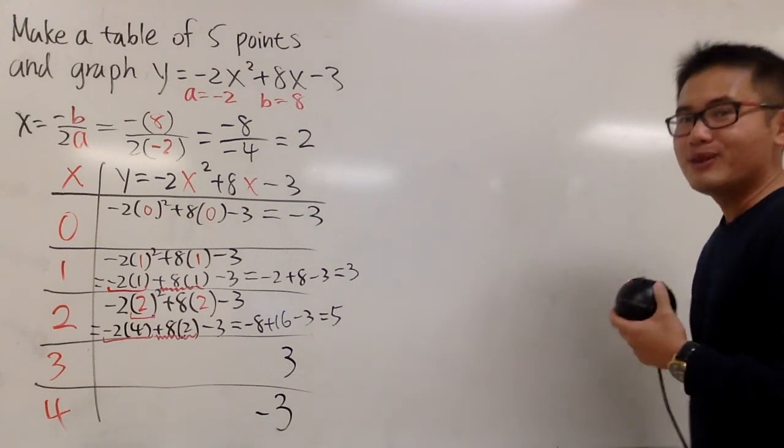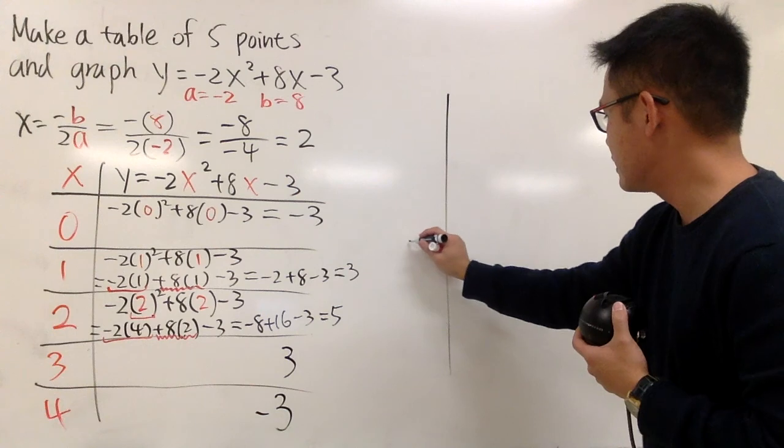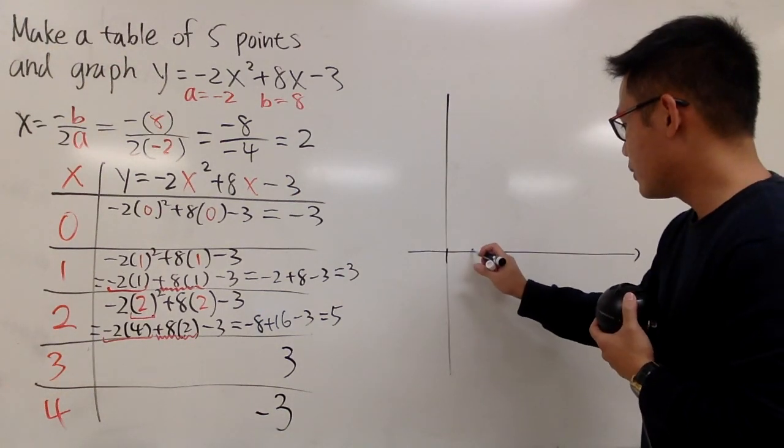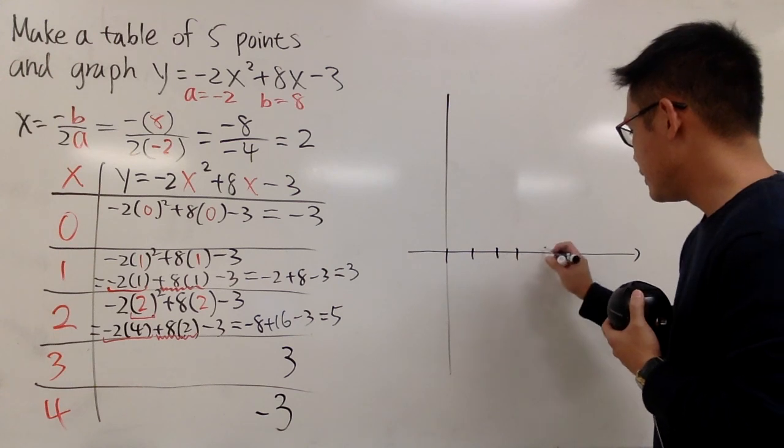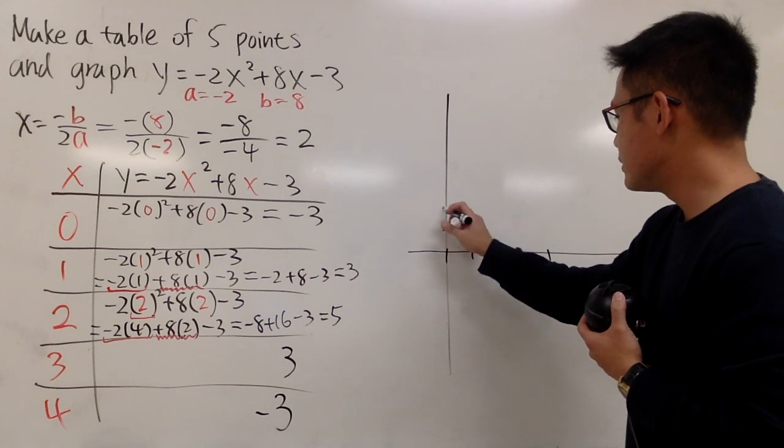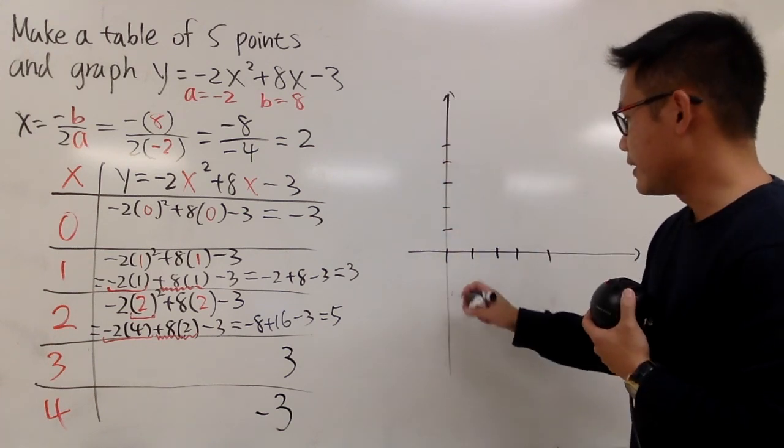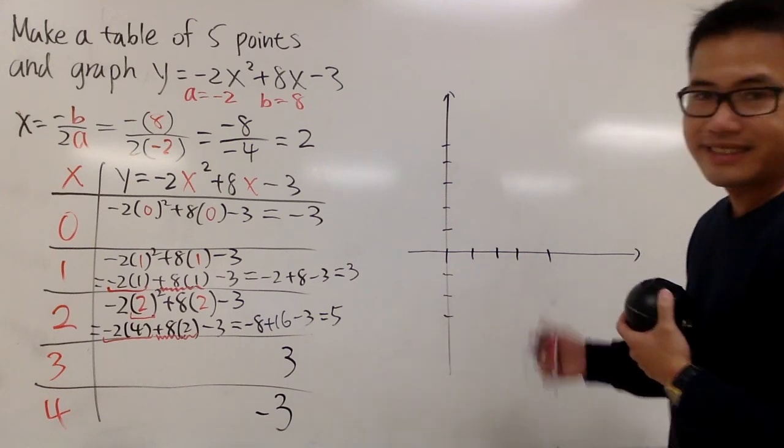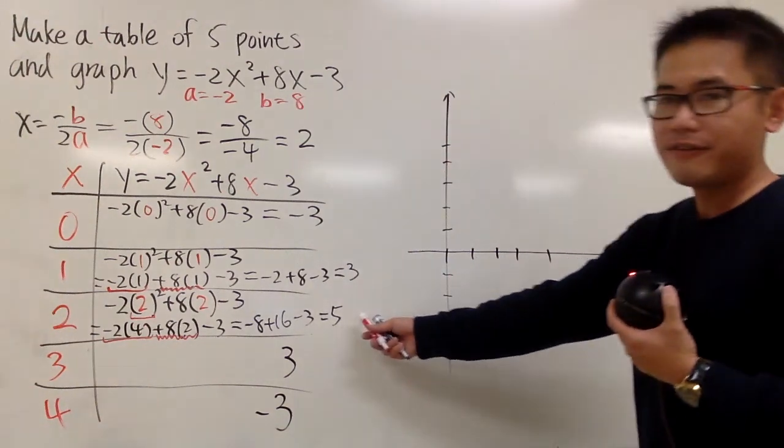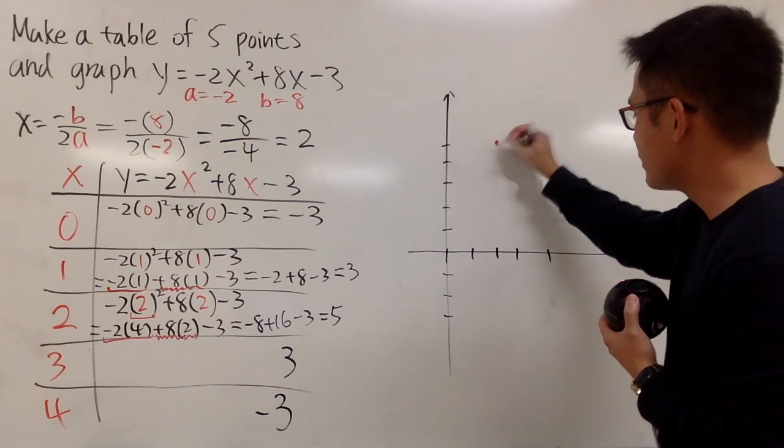Okay, we have the table of values, and we are going to be just graphing this, so let's see it. So, I need to have 0, 1, 2, 3, 4, and I also have to go up to 5. This is going to be 1, 2, 3, 4, 5. And then I need to go down to negative 3, so 1, 2, 3, like this. First of all, 2, 5, that's the vertex, right here, 2, 5, so it's right here.